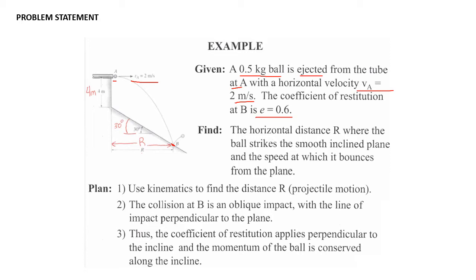From the diagram, the sloped plane is at an angle of 30 degrees with distance R along it, and it goes up vertically another 4 meters to reach point A. We need to find the horizontal distance R where the ball strikes the smooth inclined plane, and also find the speed at which it bounces from the plane — that's where we'll use the coefficient of restitution.